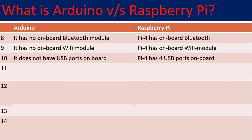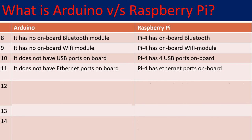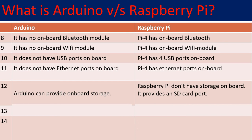Arduino doesn't have USB ports, whereas Raspberry Pi 4 has 4 USB ports — just like a computer — so you can plug in a monitor, keyboard, mouse, or any USB devices. Arduino does have a USB-to-serial port through which you can program it. Arduino doesn't have an Ethernet port onboard, whereas Raspberry Pi 4 does. Arduino has onboard storage, whereas Raspberry Pi uses an additional SD card slot where you load the operating system and use the Raspberry Pi as a computer.